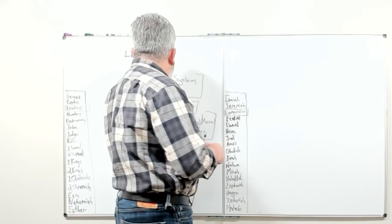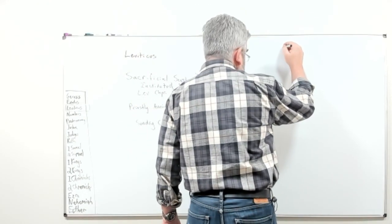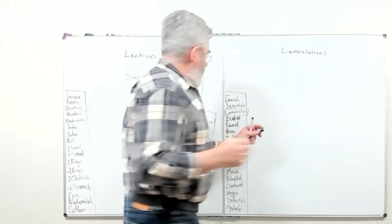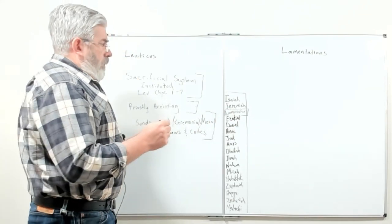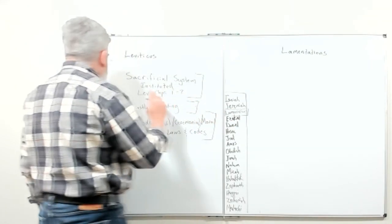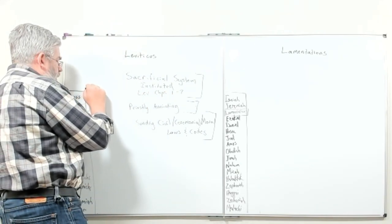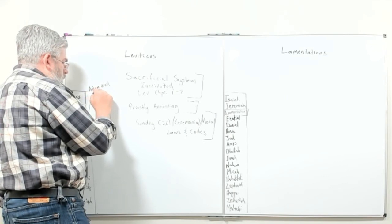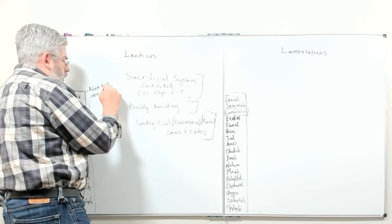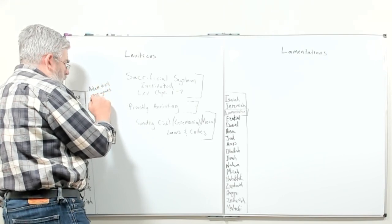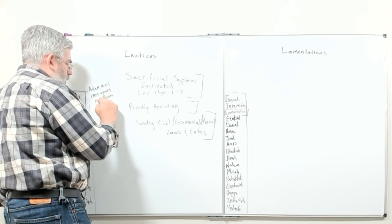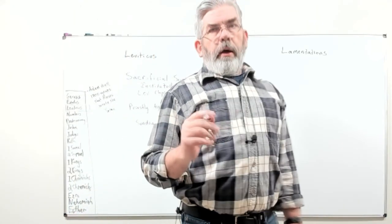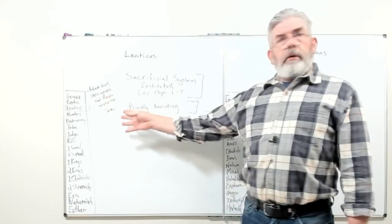Now let's look at how Leviticus corresponds to Lamentations. Lamentations is the third book of the prophets, written by Jeremiah. In our former video, we saw how Moses — and it's very interesting — 1,700 years after Adam died, Moses started writing the Torah.